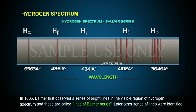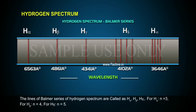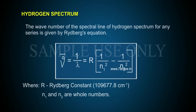Later, other series of lines were identified. The lines of the Balmer series of hydrogen spectrum are called H-alpha, H-beta, and H-gamma. For H-alpha, n is equal to 3. For H-beta, n is equal to 4. For H-gamma, n is equal to 5. The wave number of the spectral line of hydrogen spectrum for any series is given by Rydberg's equation.